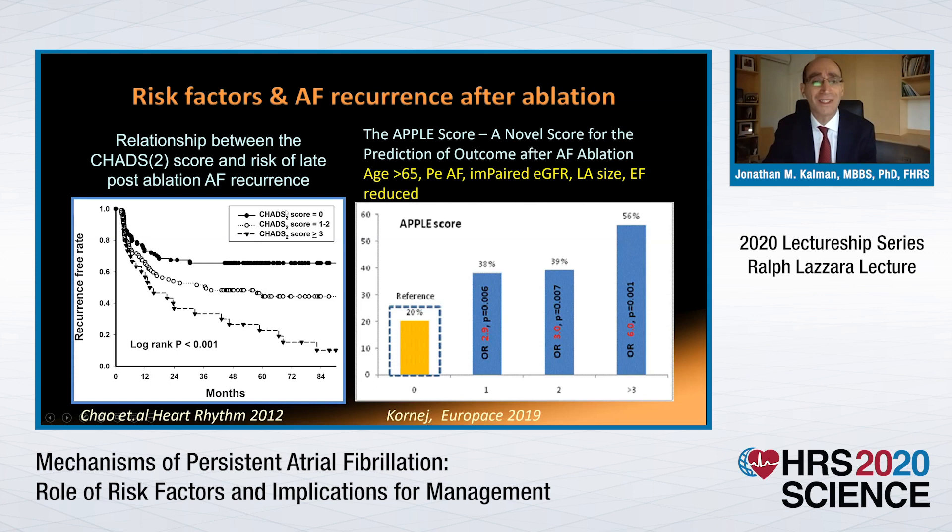Two scoring systems — the CHADS scoring system and the APPLE scoring system — use different risk factors for remodelling, but both show the same thing: freedom from atrial fibrillation is lower, and recurrence is higher, the more of these risk factors that you have.